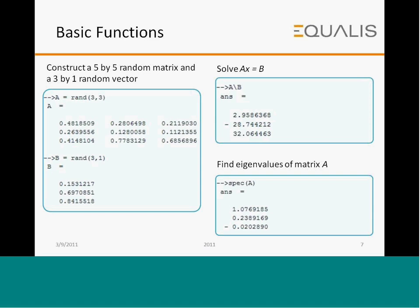If you want to construct a random matrix and a random vector, A equal to RAND(3,3) constructs a matrix consisting of random numbers, size 3 by 3. B equal to RAND(3,1) constructs a column vector consisting of 3 random entries. To solve AX equal to B, this shows how to solve for the solution. To calculate the eigenvalues of matrix A, the command used is SPEC of A.